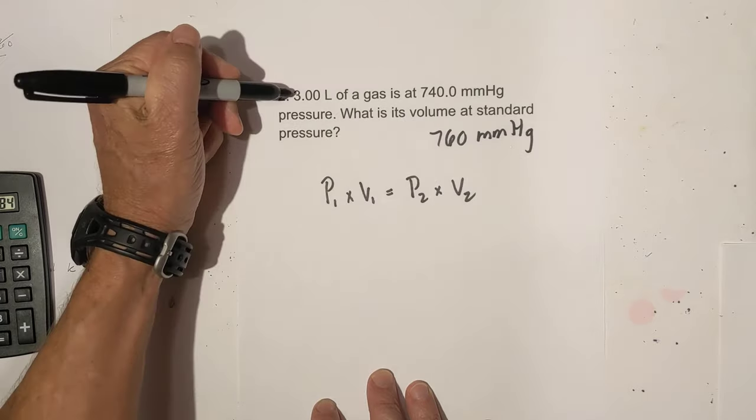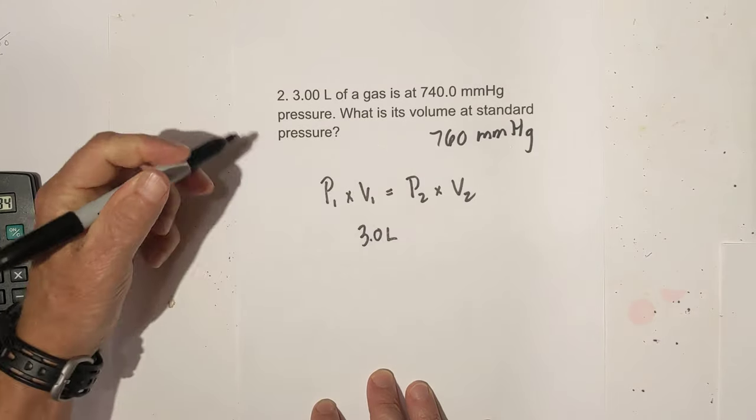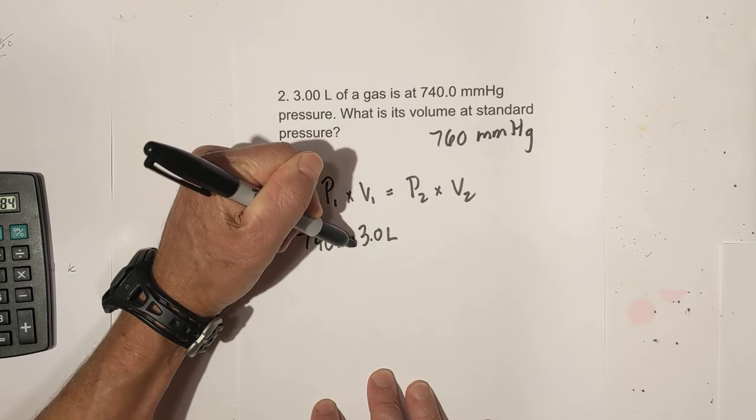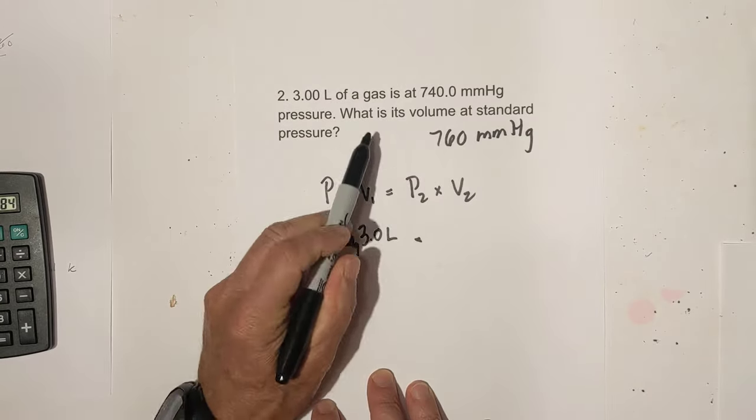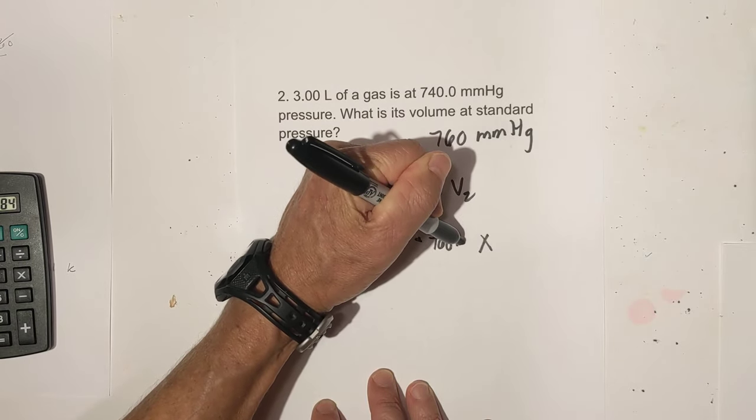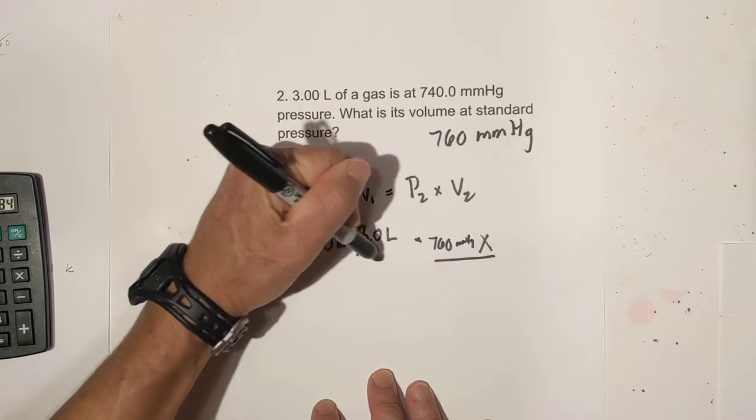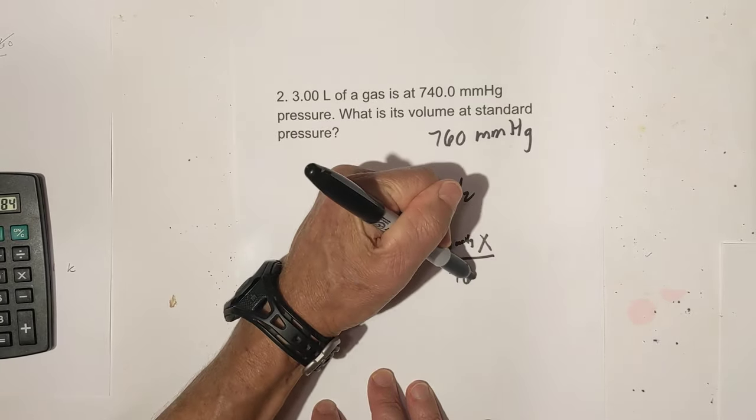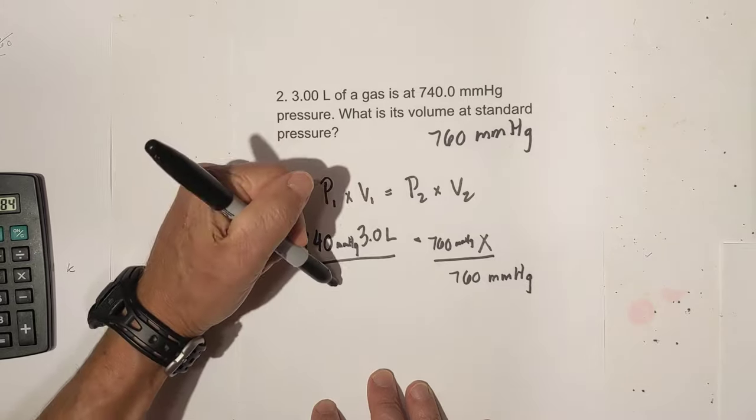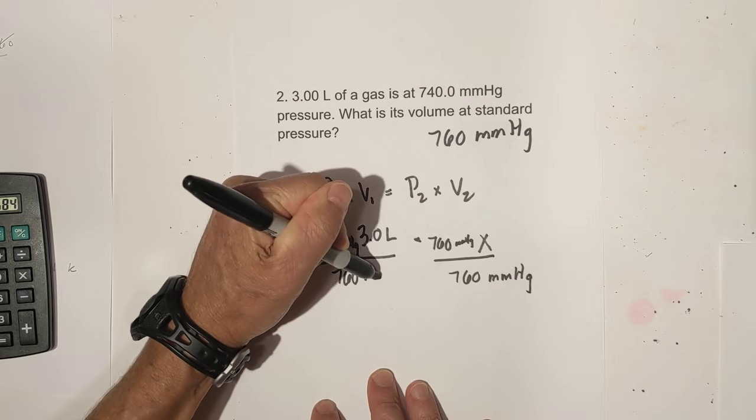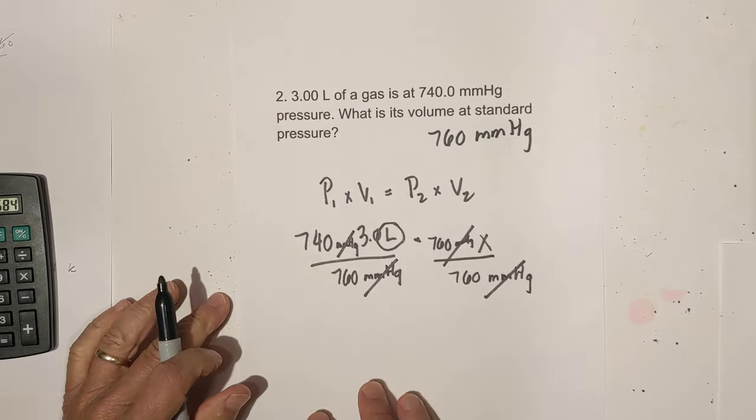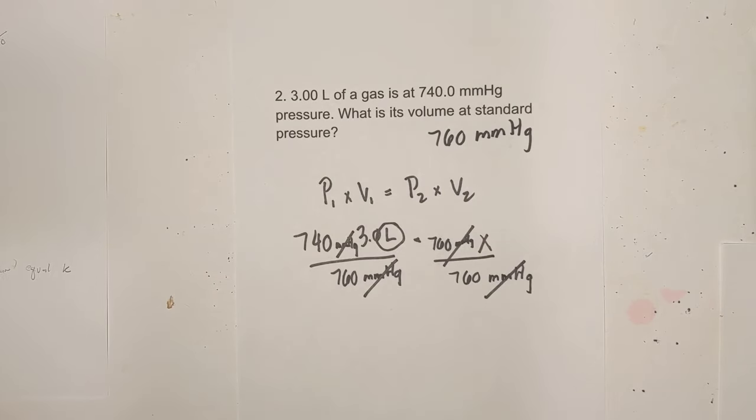Now let's just plug in what we have. We have a volume of 3 liters. We have a pressure of 740 mmHg, and that equals, we're trying to find volume, and we have a pressure of 760 mmHg. So now what we do is we divide each side by 760 millimeters of mercury, and you'll see these cancel. The units of measure cancel.